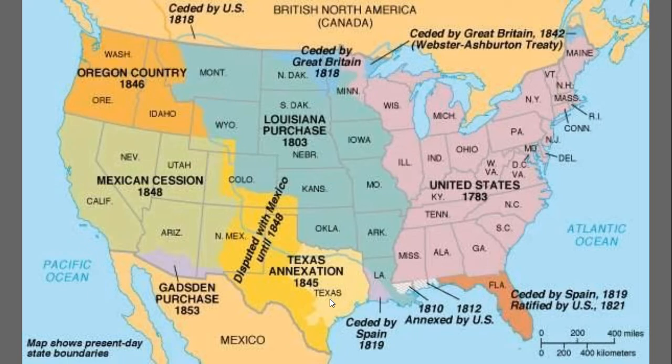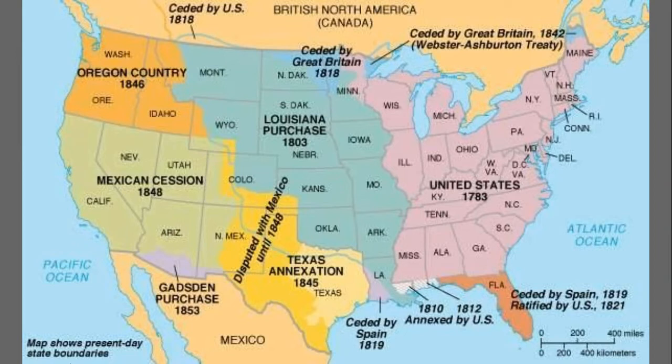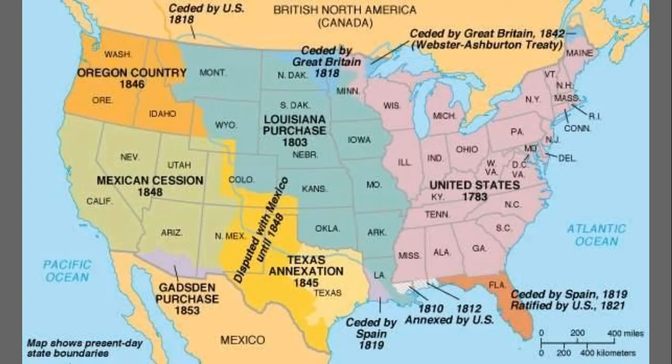A few years later, the U.S. and Mexico agreed to the Gadsden Purchase, initially done by the U.S. for a possible southern route of a future transcontinental railroad. I'm going to move on to the artwork now, but keep in mind this was just a brief overview, and I did not cover the many conflicts and ultimate subjugation of the many Native American tribes who did not agree to all of these purchases and treaties between these nation states.